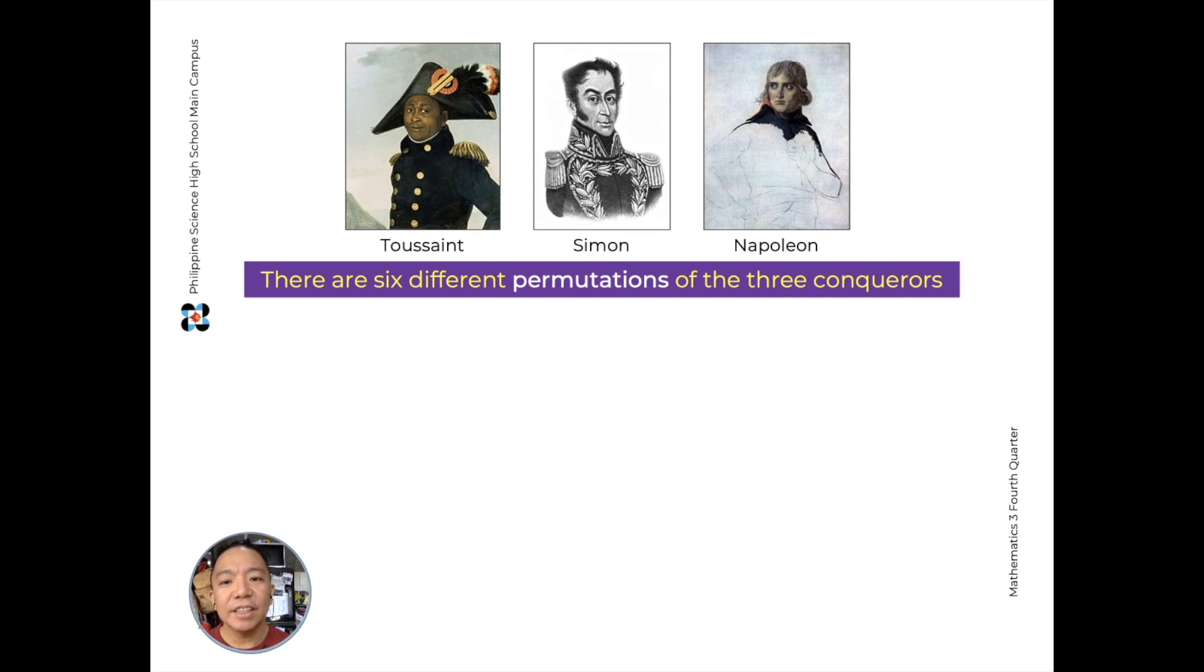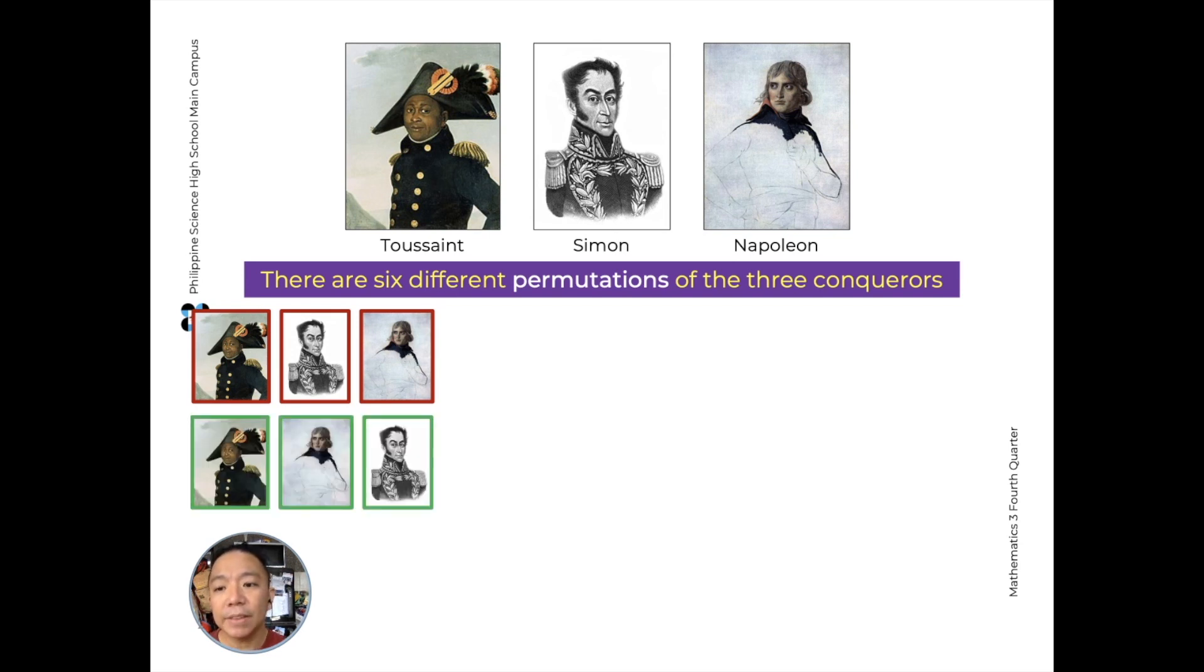There are six different permutations of our three conquerors. What do we mean by that? It means that we can arrange them in order, like first, second, third, in six different ways. So one way would be Toussaint first, Simone, then Napoleon. Then you have Toussaint, Napoleon, and Simone.